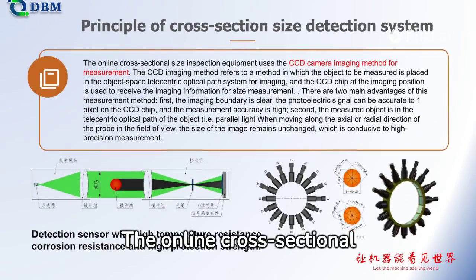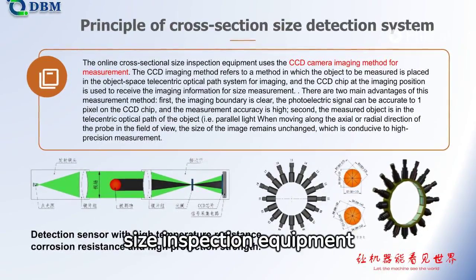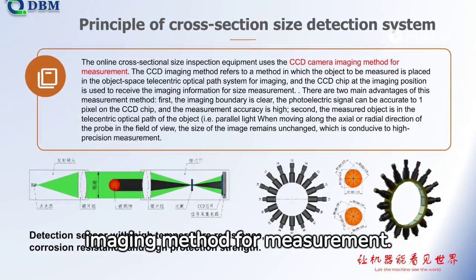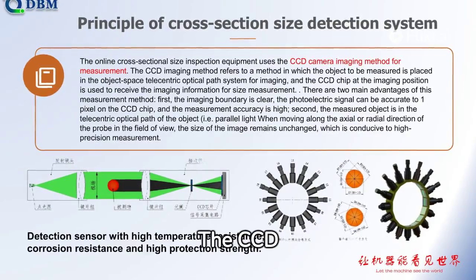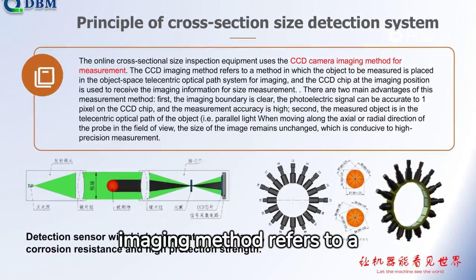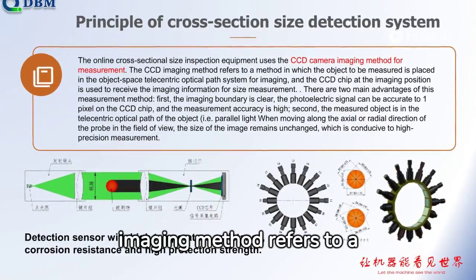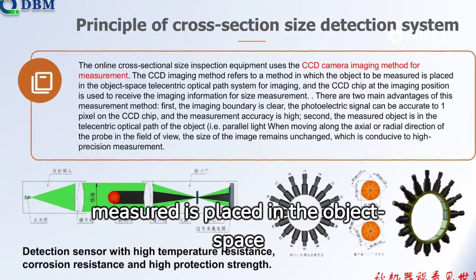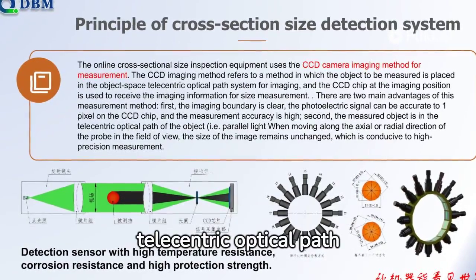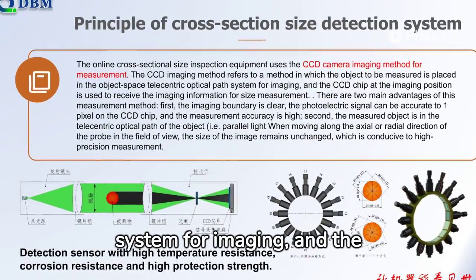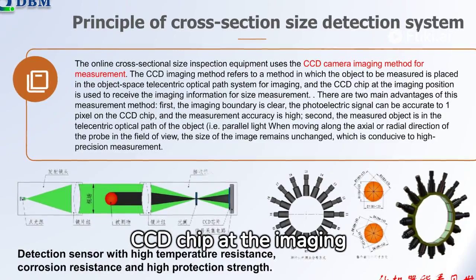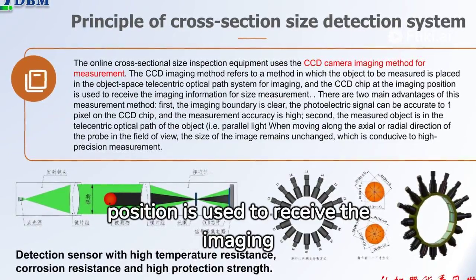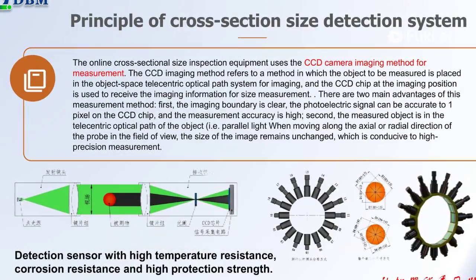The online cross-sectional size inspection equipment uses the CCD camera imaging method for measurement. The CCD imaging method refers to a method in which the object to be measured is placed in the object-space telecentric optical path system for imaging, and the CCD chip at the imaging position is used to receive the imaging information for size measurement.